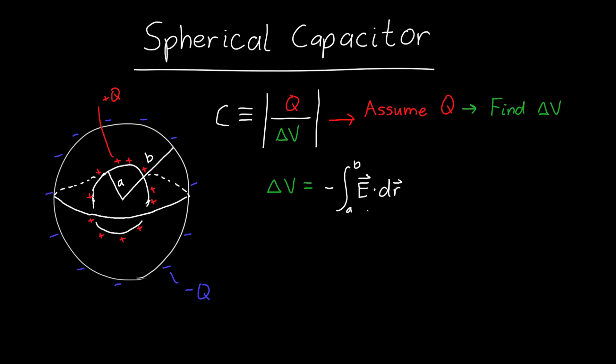To figure out delta V, we need to figure out two things: dr and E. dr is pretty straightforward. Because this is a problem with spherical symmetry, we can work in spherical coordinates. In that case, dr is just equal to r hat, the unit vector in the radial direction, multiplied by dr.